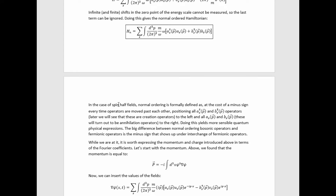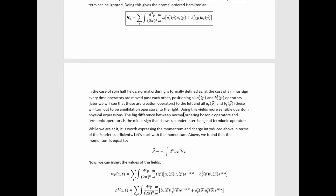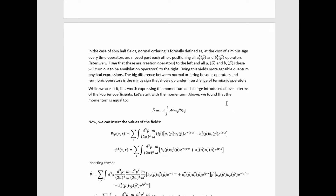In the case of spin-half fields, normal ordering is formally defined as positioning all a-daggers and b-daggers to the left and a's and b's to the right — at the cost of a minus sign every time operators move past each other — where we'll find that a-daggers and b-daggers are creation operators and a's and b's are annihilation operators. This yields more sensible quantum physical expressions. The big difference between normal ordering bosonic and fermionic operators is the minus sign that appears under interchange of fermionic operators.